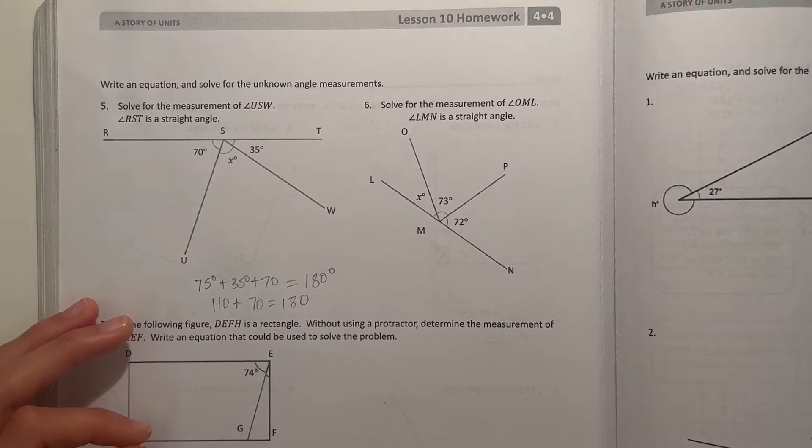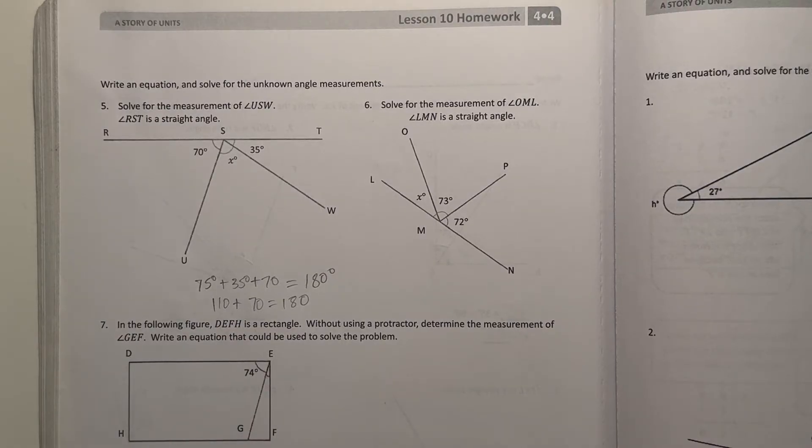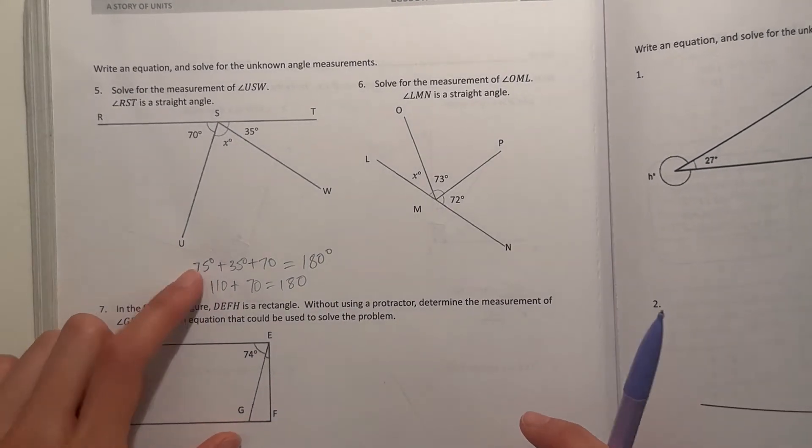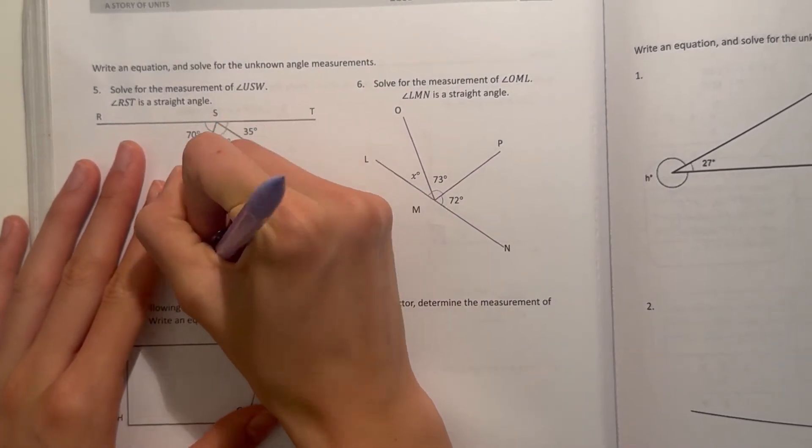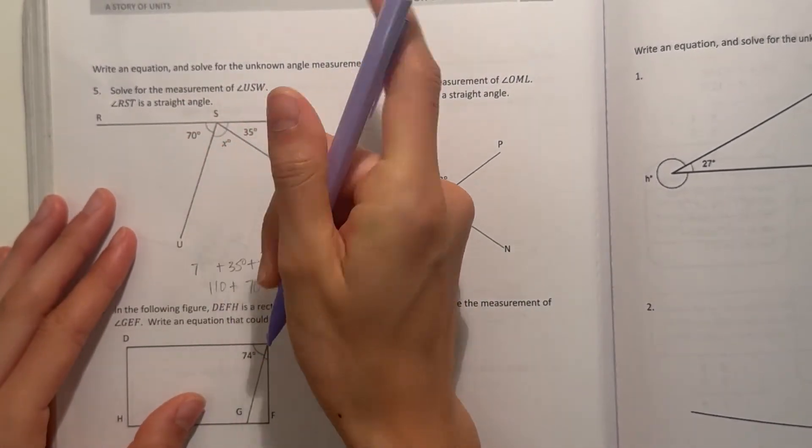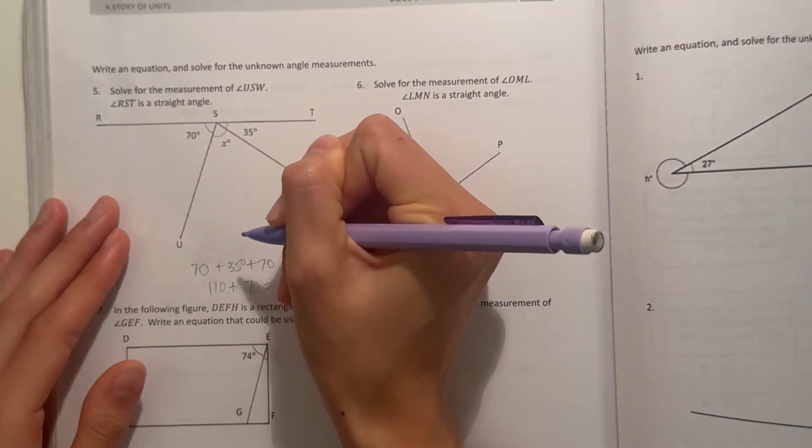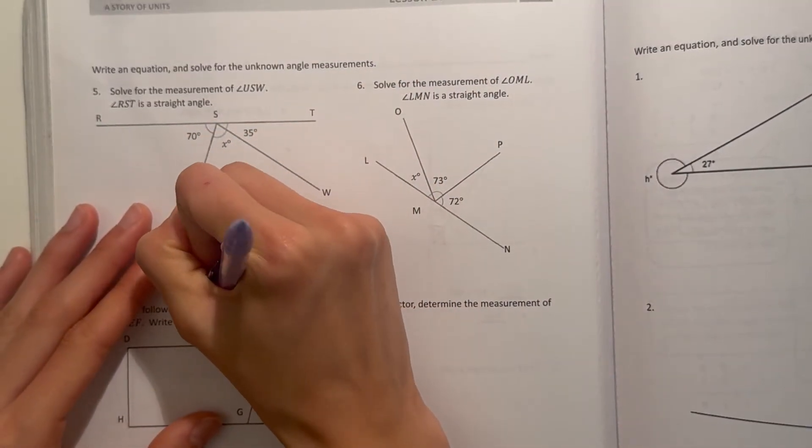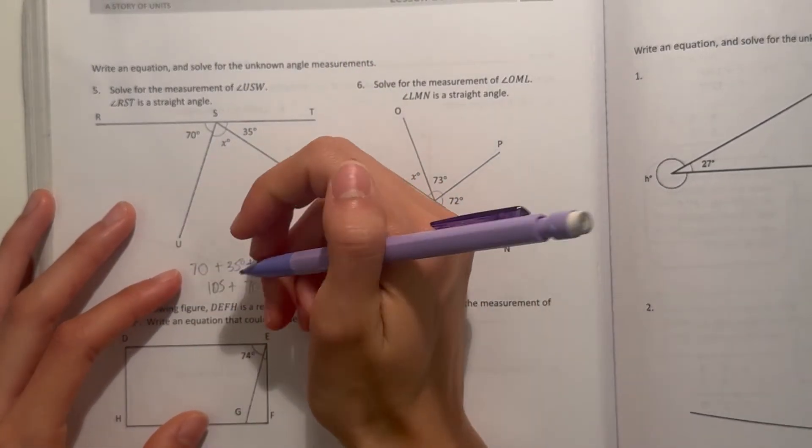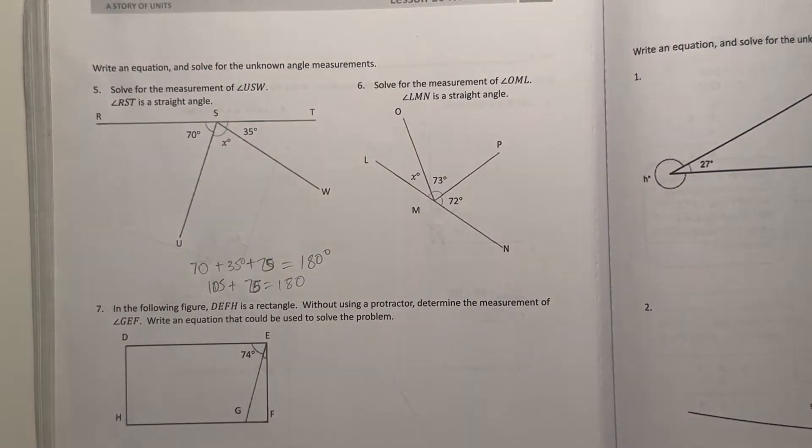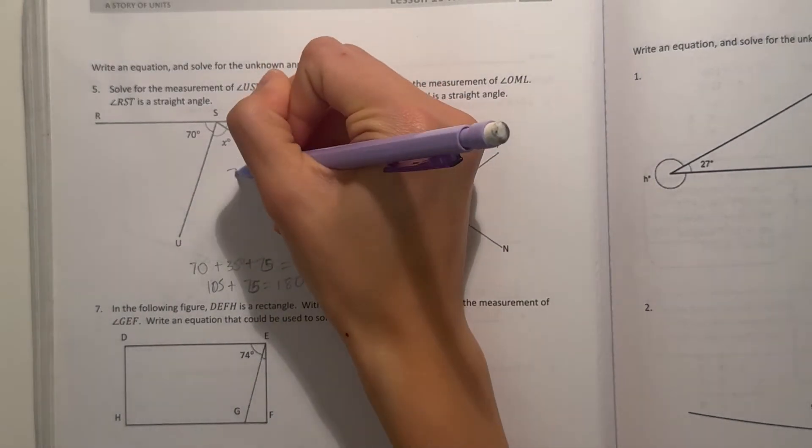Wait, hold up. Did I do something? Hold on, 75 plus 3... Oh that is 75. That's 70, my bad. It's 70. So 70 plus 35, that's 105. So 180 minus 105 is 75. So our answer should be 75. Yeah, that is 75 degrees.